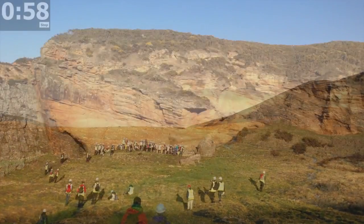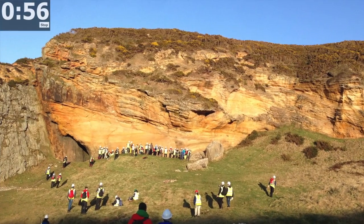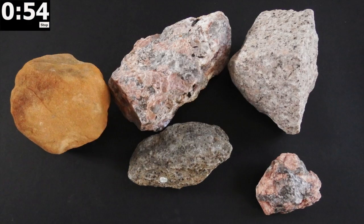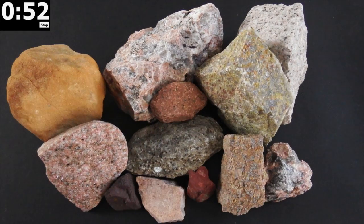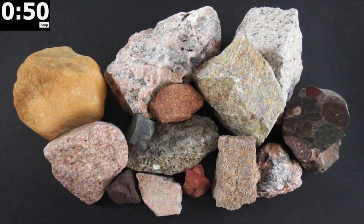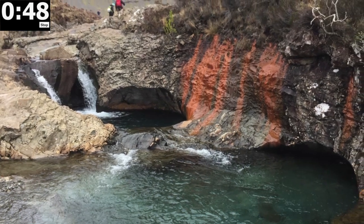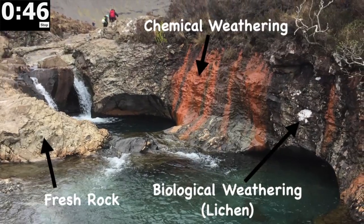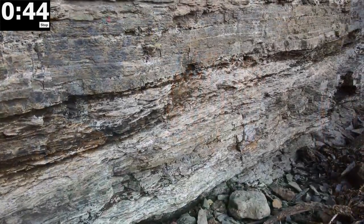One of the most fundamental descriptions a geologist makes in the field is of the rock. An easy start point is to describe the colour of what you see. Certain rocks have a tendency to be similar in colour wherever they are found, but you have to be careful. Weathering and biological activity can dramatically alter a rock's appearance.